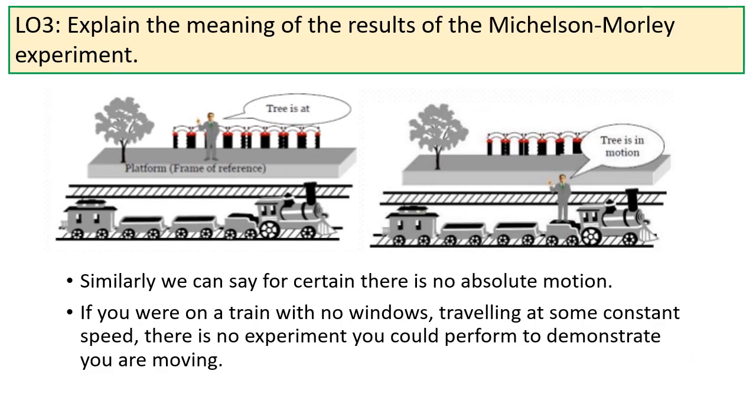However, scientists weren't ready to get rid of Galileo's ideas just yet. The idea that absolute motion did not exist had a very, very firm experimental grounding.